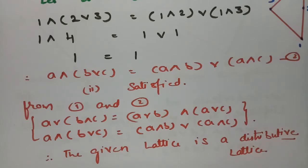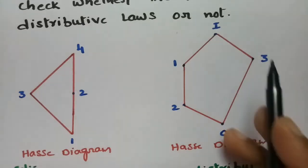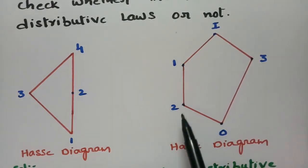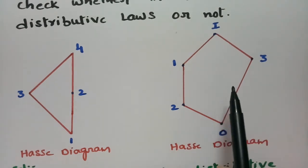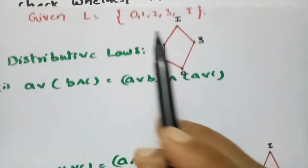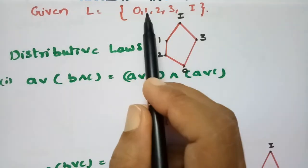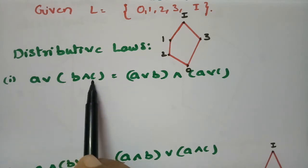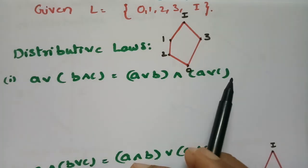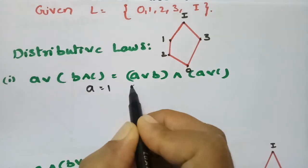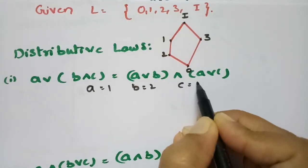Coming to the second question, from the second Hasse diagram: the least element is 0 and the greatest element is I, with 1, 2, and 3 in between. We have to check whether this lattice satisfies the distributive laws. We check A join (B meet C) = (A join B) meet (A join C), selecting elements A = 1, B = 2, C = 3.